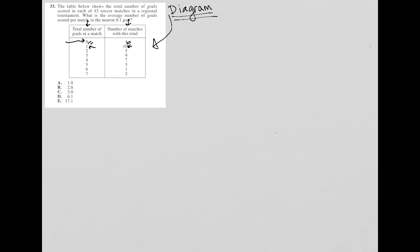It's good to make sure we understand how to read the table before getting into solve mode mentally. The rest of the question says: what is the average number of goals scored per match to the nearest 0.1 goals? The average number of goals scored — I know how to find an average.